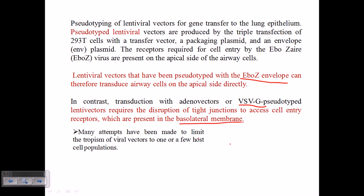Many attempts have been made to limit the tropism of viral vectors to one or a few host cell populations. We can control tropism by using different types of envelopes, since the envelope is the critical region determining which cell or tissue type the virus attaches to. By modifying the envelope proteins in different ways, we can engineer specific tropism — for example, ensuring a vector attaches to gastrointestinal lining cells but not to respiratory tract cells. This gives us freedom to choose the target tissue.